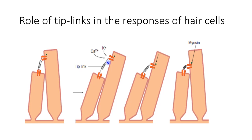Note the position of the channels: for the longer stereocilium, the channel is situated on its side, whereas for the shorter one, it is on the top. When the shorter stereocilium moves toward the longer one, the cation channels open and cations enter into the stereocilium and ultimately into the hair cell. When the vibration stops and the tectorial membrane returns to its normal position, the stereocilium straightens again and the cation channels close.